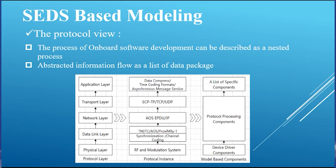The three categories are specifically: application components, data processing components, and device driving components. The protocol models abstract information flow as a list of data packets. Each layer can be modeled as a data processing component. The function of these components is to decompose the current package into data segments and sub-packages, and assign corresponding attributes to them.